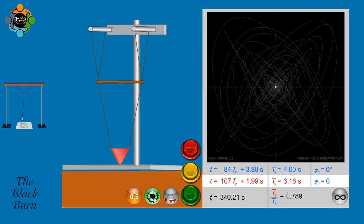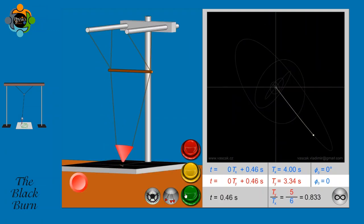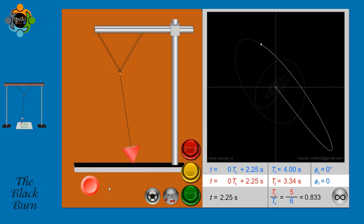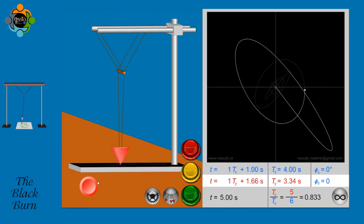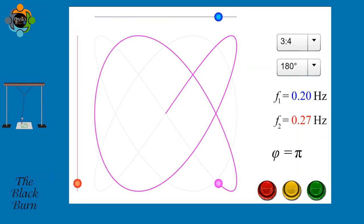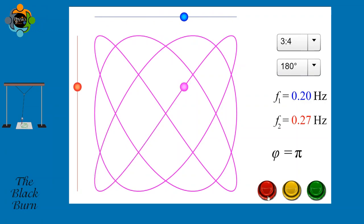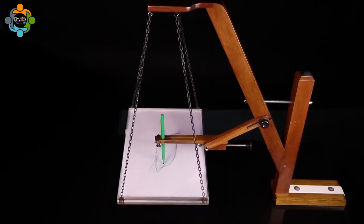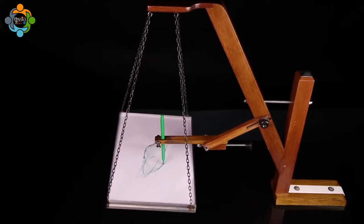A bob is suspended from a string that hangs from a V-shaped pair of strings, allowing the pendulum to oscillate simultaneously in two perpendicular directions with different periods. As a result, the bob follows a path resembling a Lissajous curve, and belongs to the family of mechanical devices known as harmonographs.